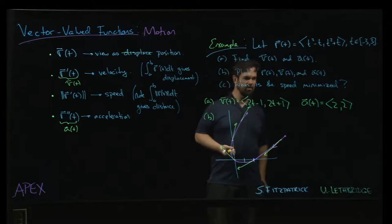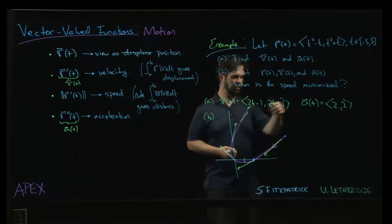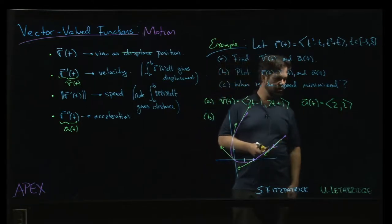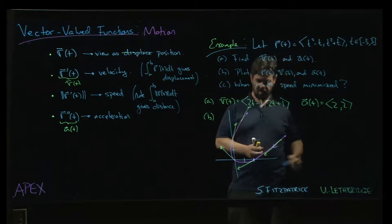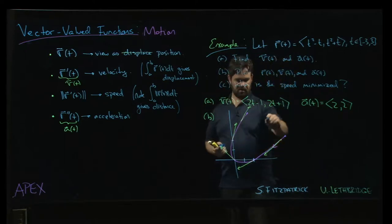And then what about the acceleration? Well, the acceleration is this sort of constant vector, all right? It's 2, 2. It's the same everywhere. It's just pointing always kind of in this direction.